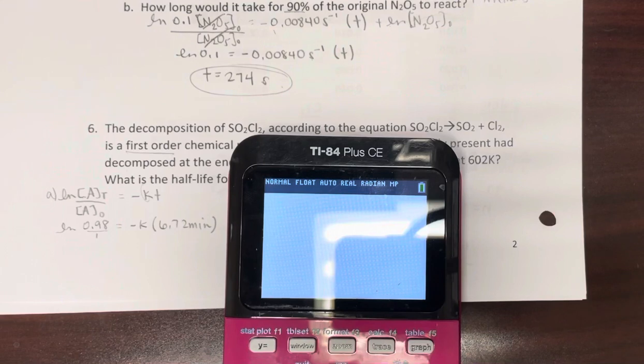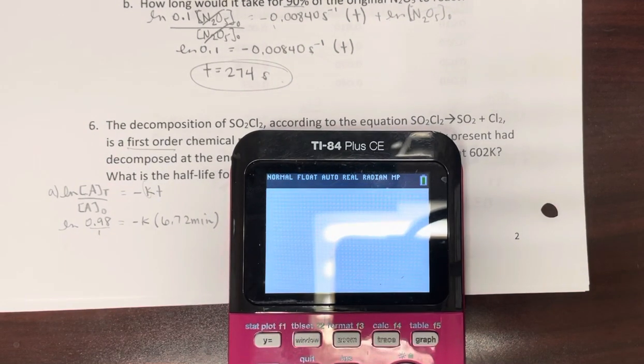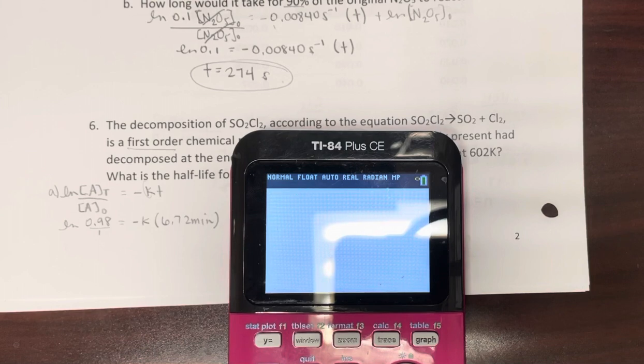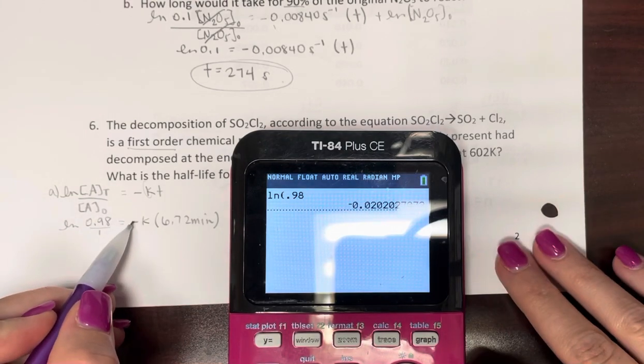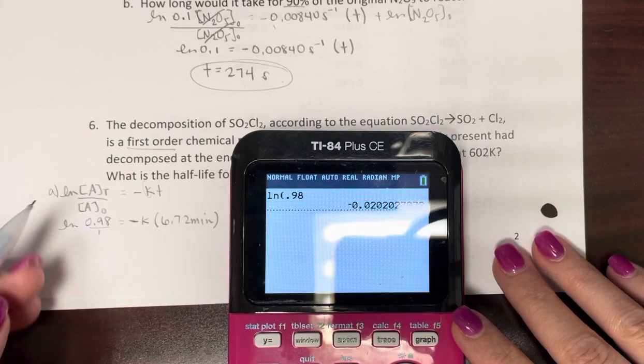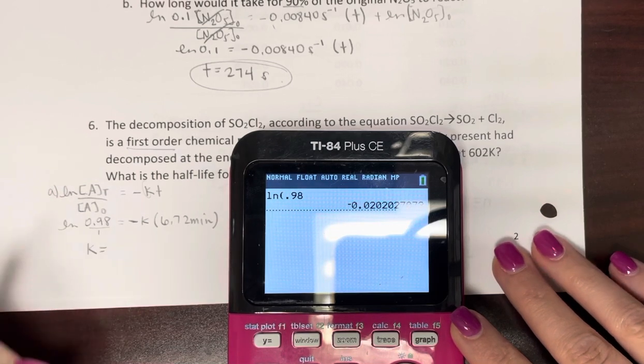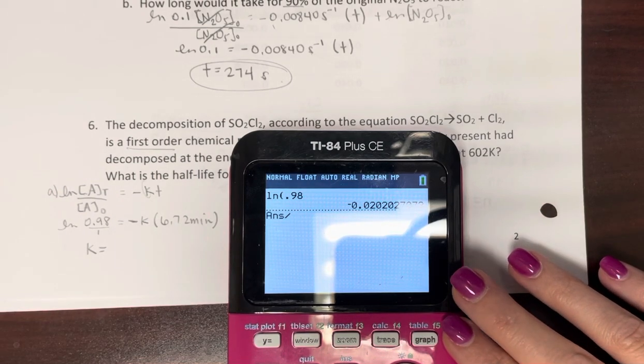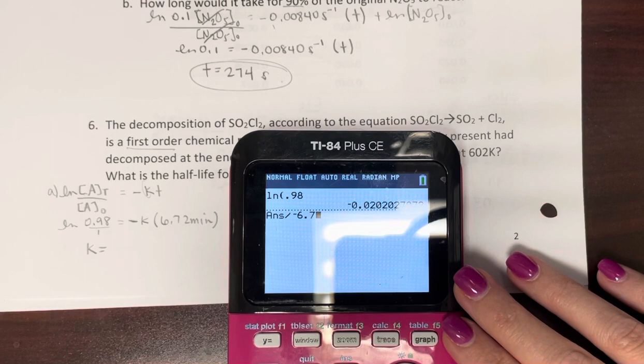Not so hard. Actually, the percentages kind of make it a little bit easier. So natural log 0.98. Now remember this negative here, that's just going to clear this. Because k should be positive values. So we're going to divide by negative 6.72.